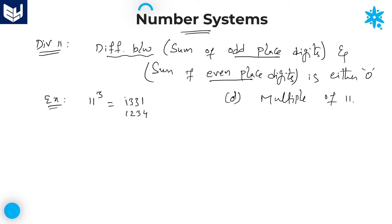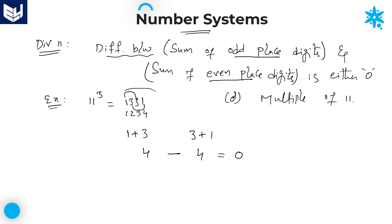Sum of odd-place digits: 1 plus 3 equals 4. Sum of even-place digits: 3 plus 1 equals 4. The difference between these two is 0, which is either 0 or a multiple of 11. So this number satisfies the divisibility rule of 11 and is divisible by 11.